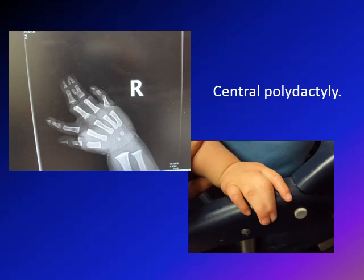The third type, which is by far the least common, is central polydactyly, where the extra digit is related to the three central digits. You can see the thumb, the small finger, and two fingers attached together — that's syndactyly. The ring finger has an extra digit attached, and these two fingers are also attached to the middle finger. In the remainder of this lecture, we'll focus mainly on pre-axial and post-axial polydactyly.